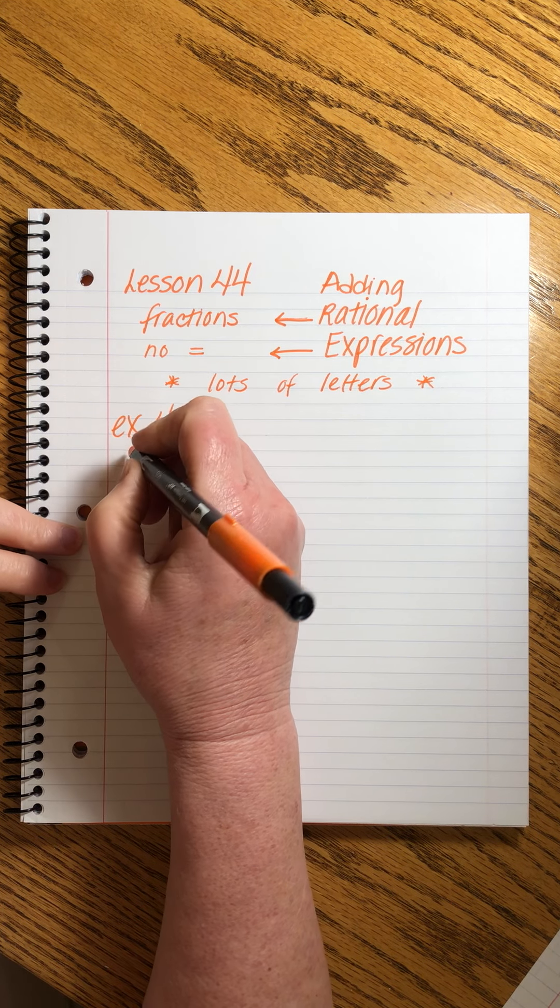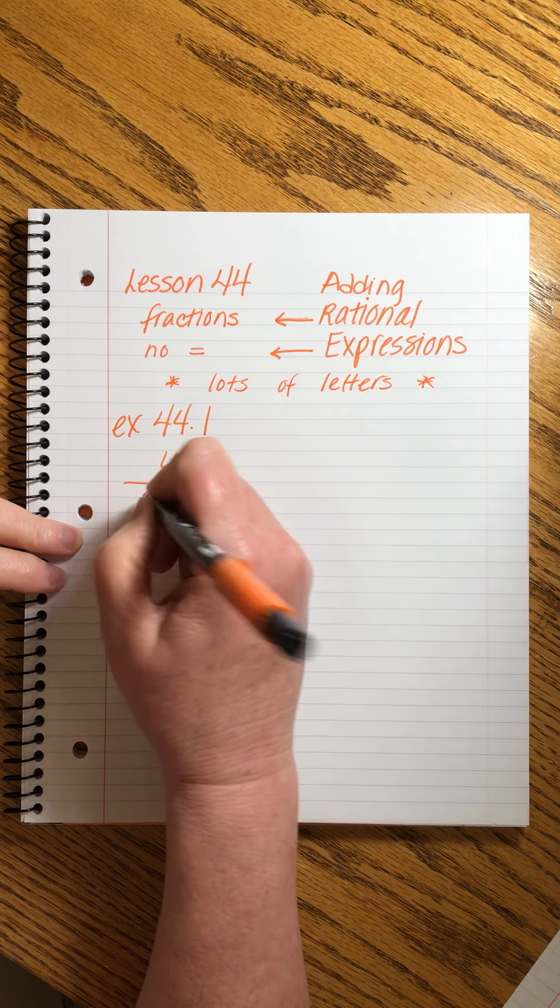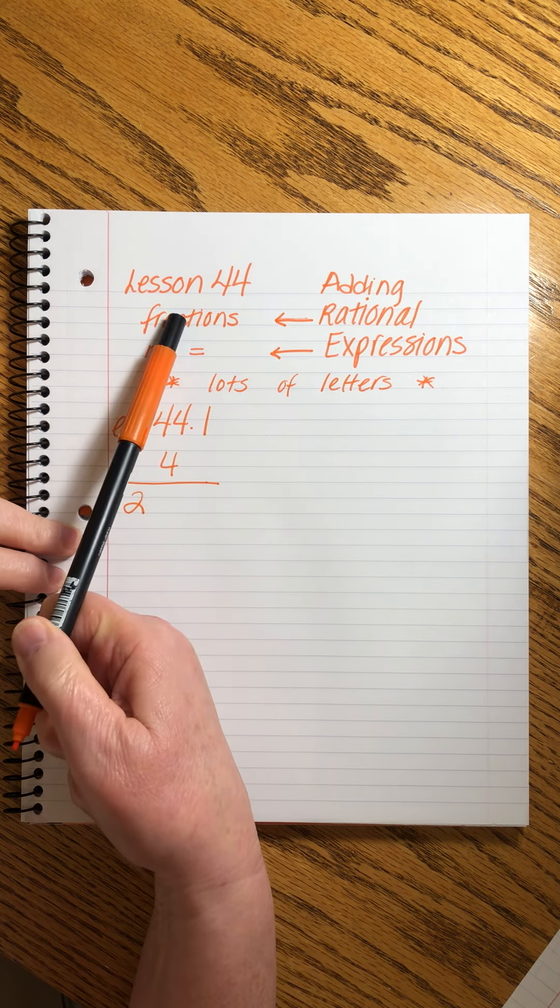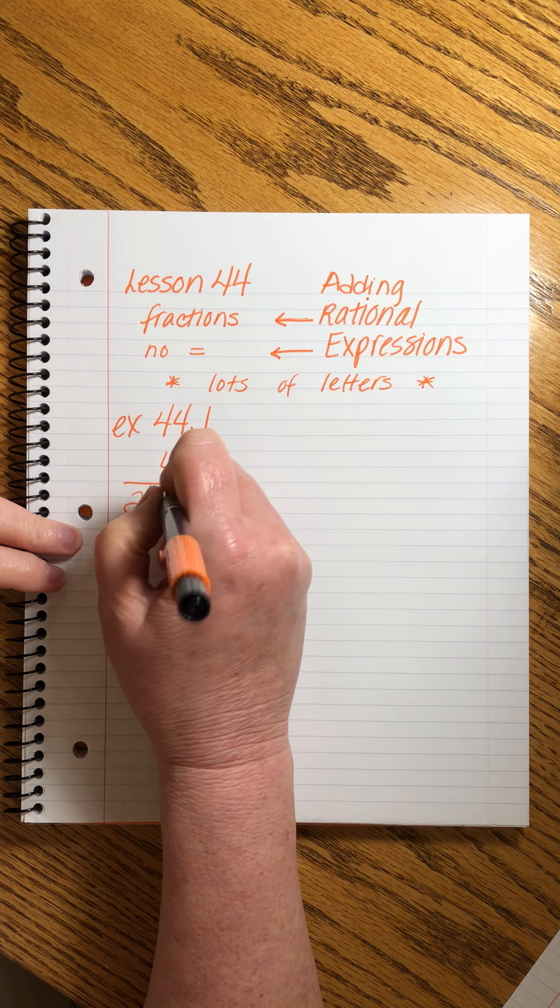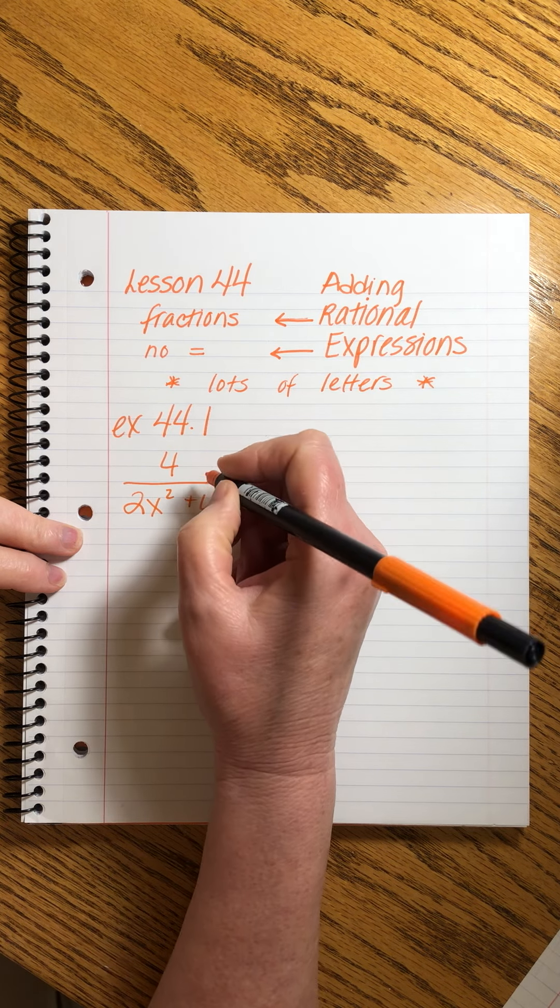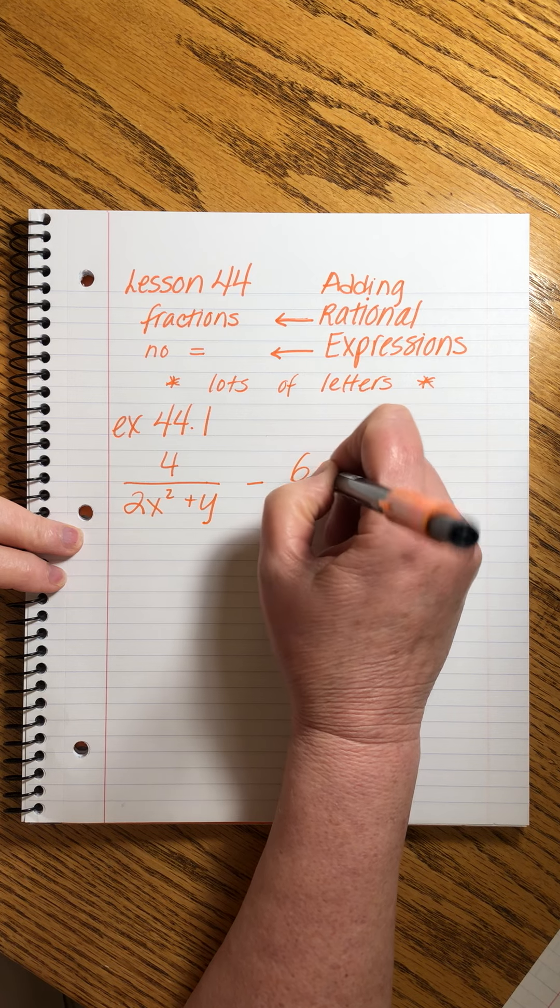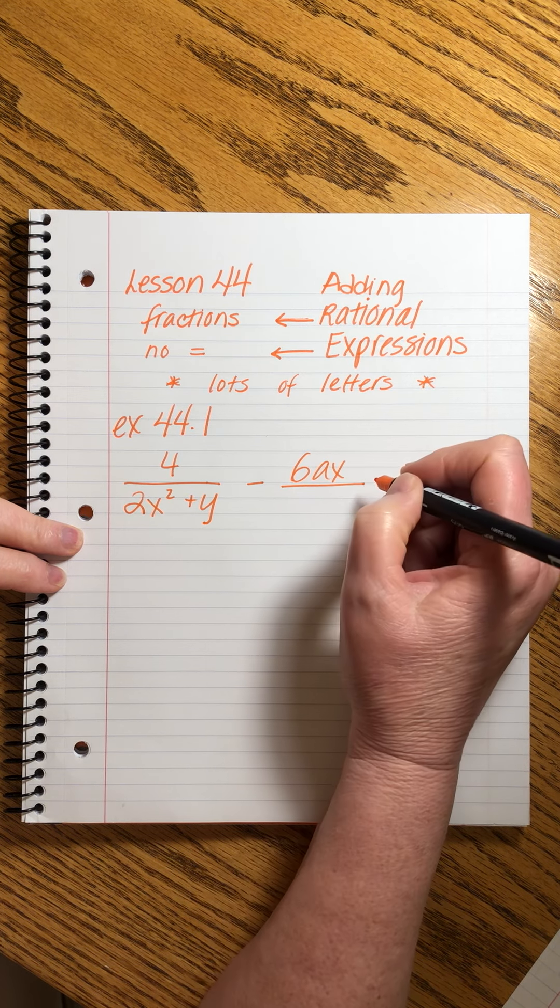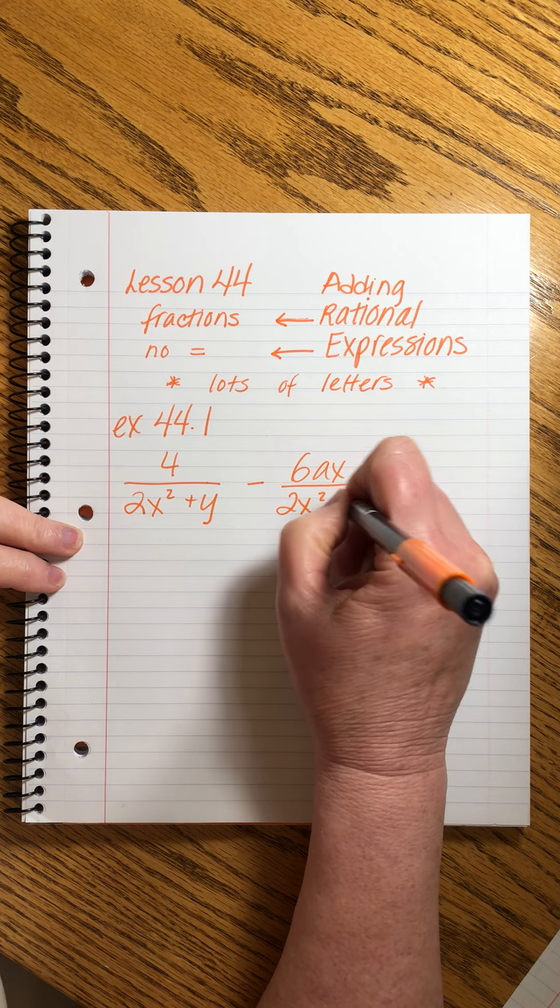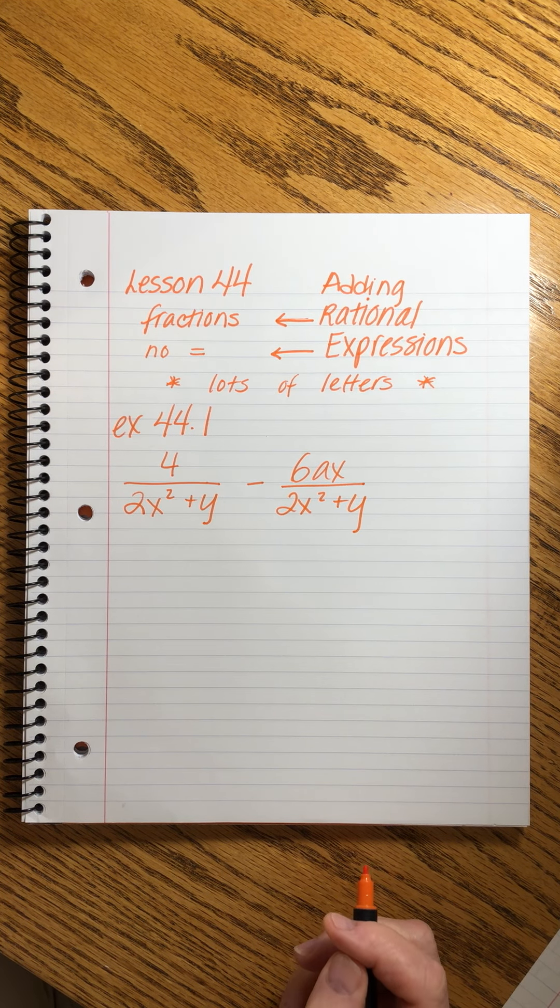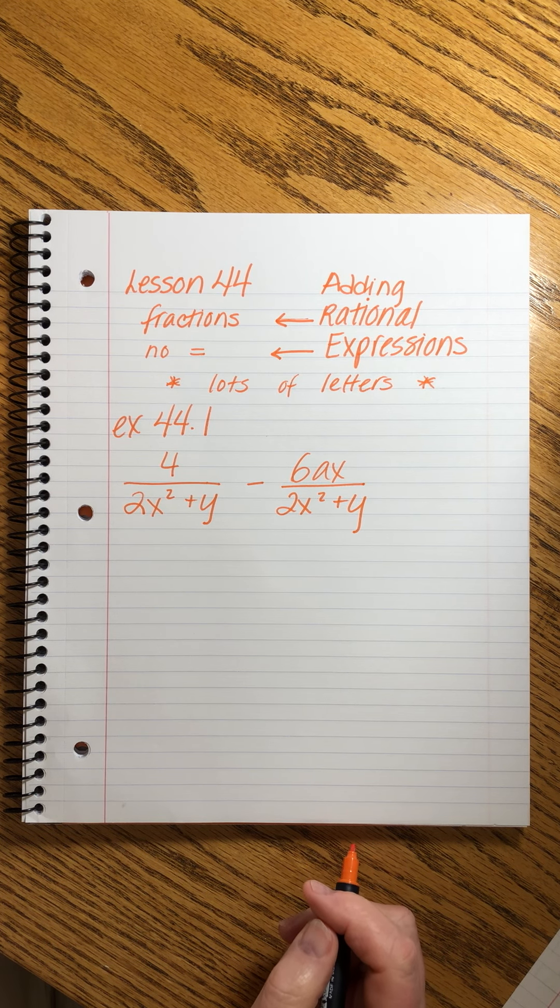Add. That's our instruction. We're told to add. And then, as promised, we have two crazy fractions. There's no equal sign, and there are indeed lots of letters. I'm copying it exactly the way John has written it. Okay, so there's our problem. I'll let you finish copying.